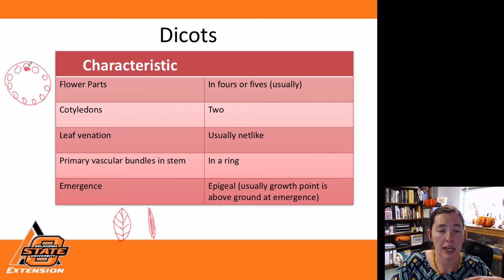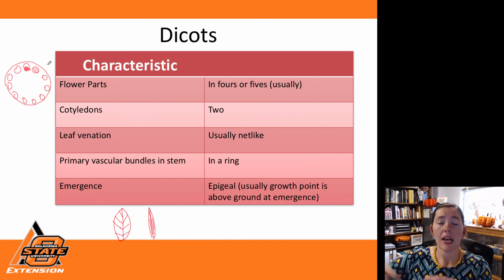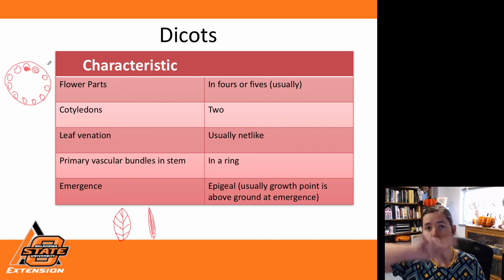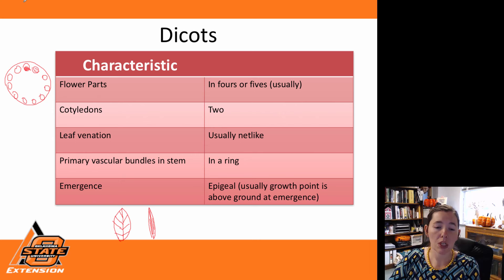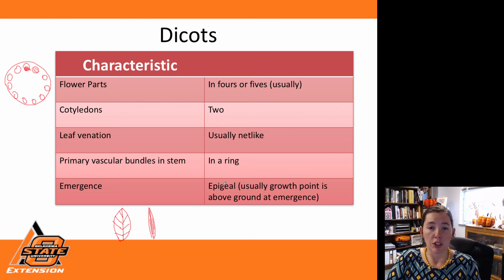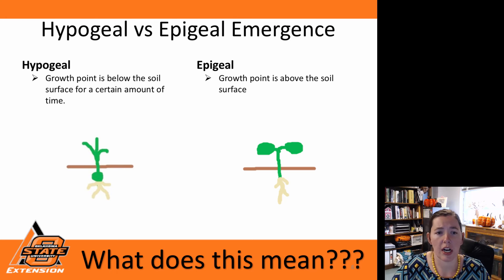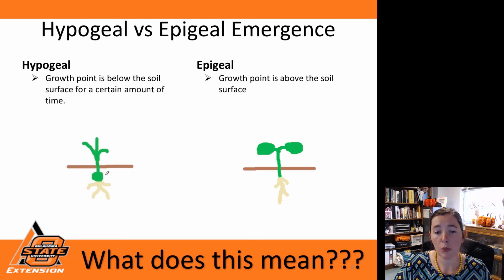Each one of these is a vascular bundle — we have our xylem and then our phloem on the other portion, working together: xylem moving water up and out of the plant, phloem moving sugars and proteins throughout the entire plant. For emergence on our dicots, it's typically an epigeal emergence, so our growth point is going to be above the soil surface as soon as these plants emerge.